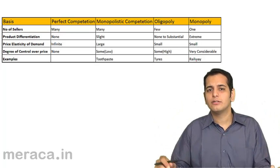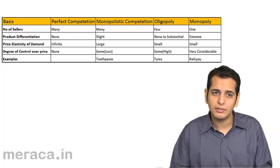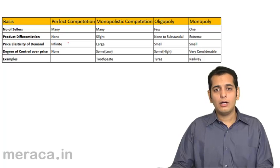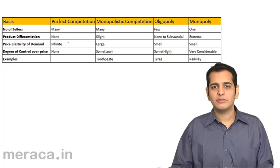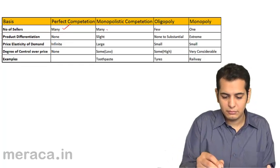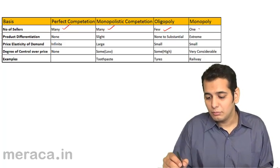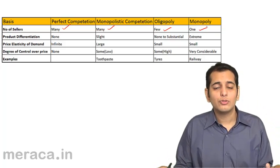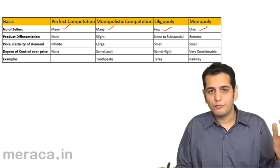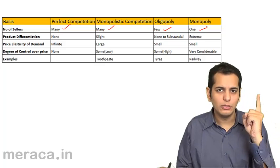Now let us understand the distinguishing features between these markets. The first is number of sellers. In perfect competition, there are many sellers. Same is the case with monopolistic competition. In oligopoly, we have few sellers. In monopoly, only one seller. So the number of sellers decreases as we move from perfect competition through to monopoly.